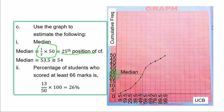This is cumulative frequency. This is the axis for cumulative frequency. And you mark 25. You trace it to the curve.